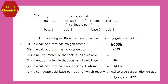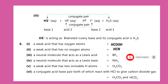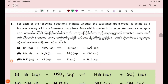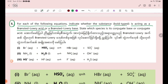Exercise number 5: for each of the following equations, indicate whether the substance is a Bronsted-Lowry acid or a Bronsted-Lowry base. State which species is its conjugate base or conjugate acid.